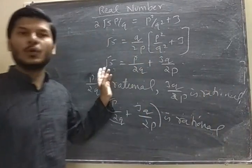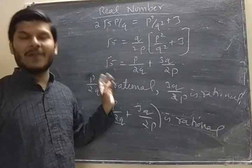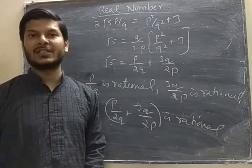Hence our supposition is wrong. Root 2 plus root 5 is irrational, hence proved.